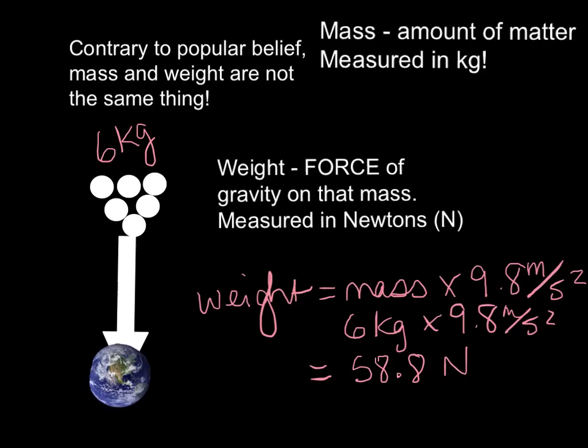A newton is a kilogram meter per second squared. All we do is we take our kilograms and we multiply by our meters per second squared, which is really ugly, so we rename it the newton.